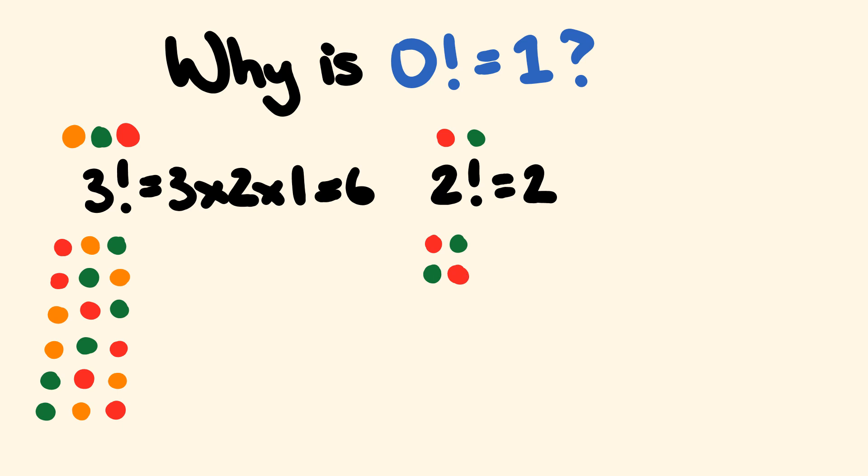What about if we have a look at if we only had one object, just a red object. Well, how many different ways can we arrange that red object? Well, that's equal to one factorial, but you can only do it one way.